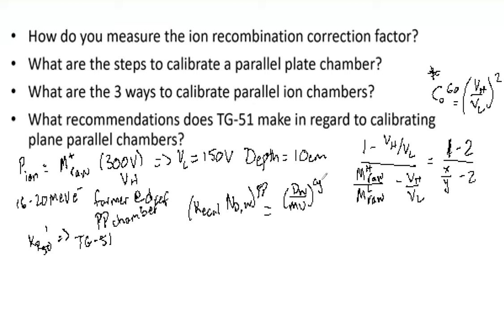That is going to equal the dose to water divided by the MU, and that's for your cylindrical chamber. And that's going to be multiplied by the number of MU, typically we do 100 but technically you can do whatever you'd like. And that is going to be divided by your fully corrected reading multiplied by that kr50 prime value for the parallel plate.